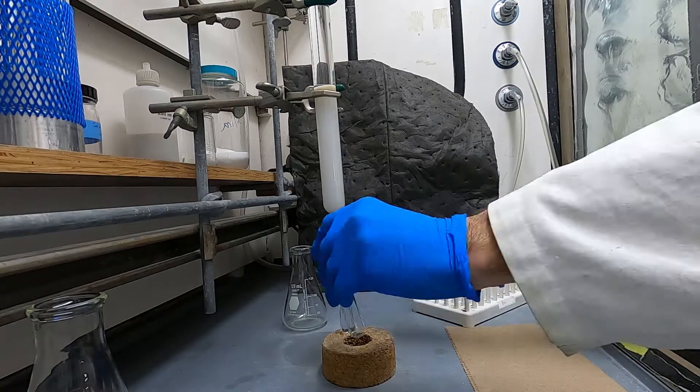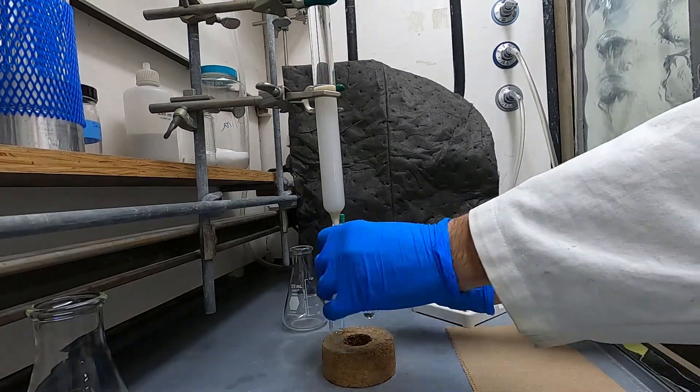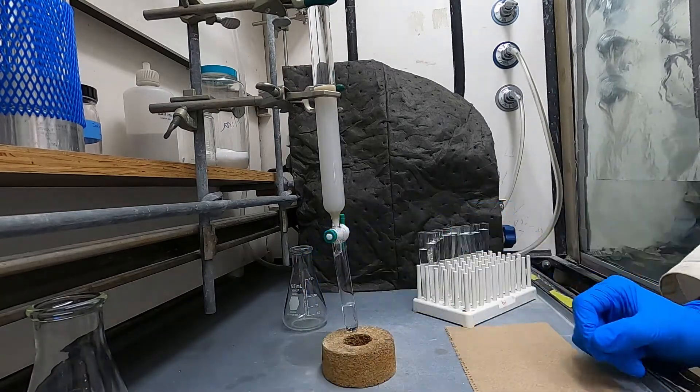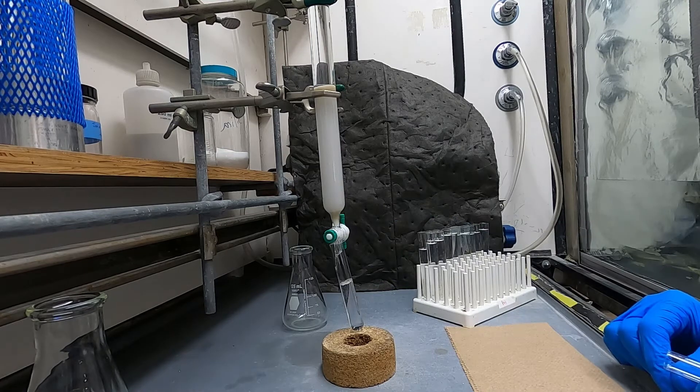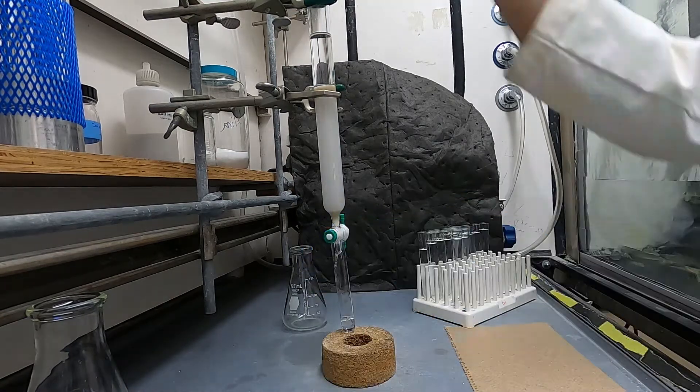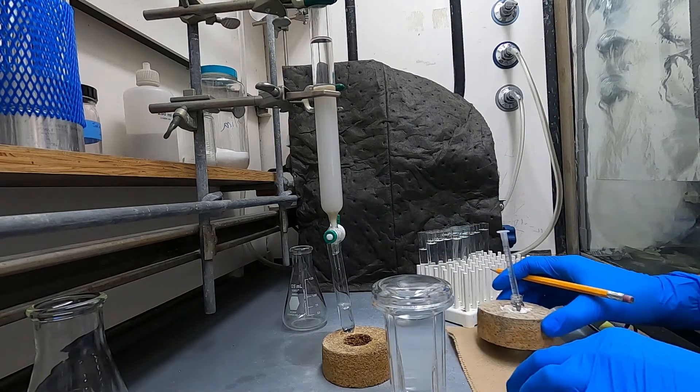Yeah so while you're collecting fractions you'll just want to choose the fraction size that is appropriate for what you're doing. If you're isolating hundreds of milligrams or even grams of something you might want to use a bigger column fraction size because you're going to be using a bigger column.